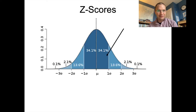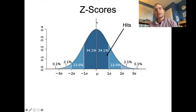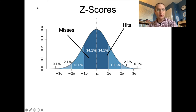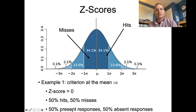Let's say we have our criterion right in the middle of the normal distribution. We already know that this leaves 50% of the distribution on either side because a normal distribution is symmetric. If the criterion were to land right in the middle of the perceptual evidence distribution for the signal stimulus, we'd have 50% hits on the right-hand side and 50% misses on the other side — not a great batting average. So if the criterion is right at the mean, its Z-score is zero and it splits the distribution into 50% on either side.